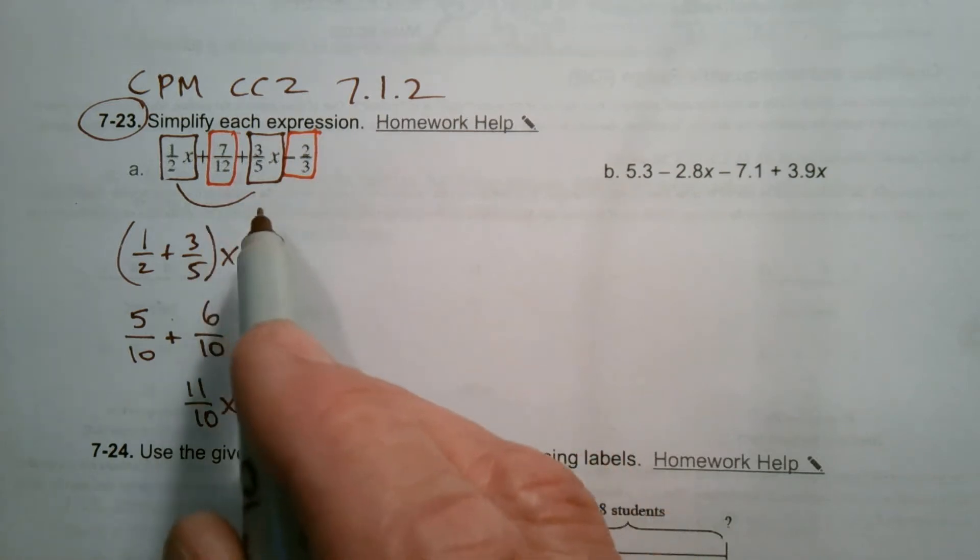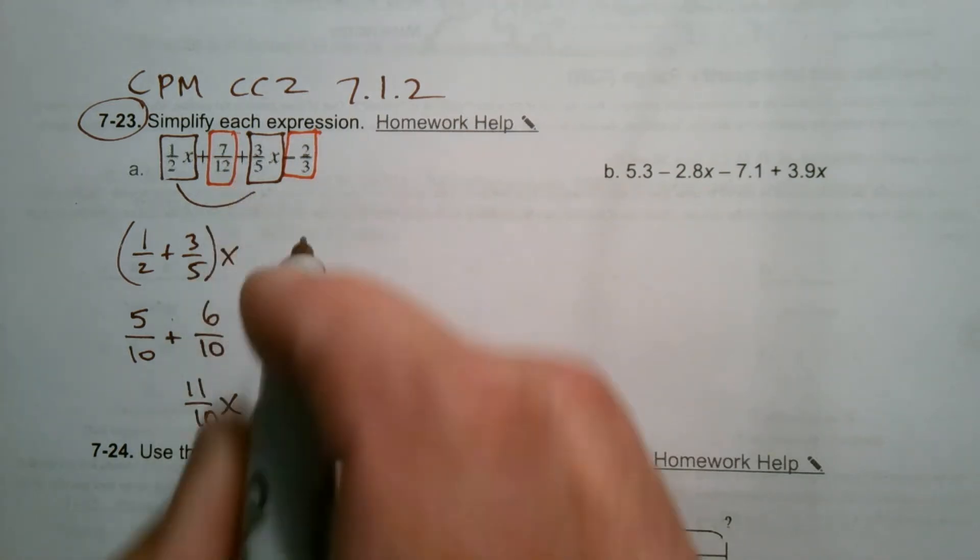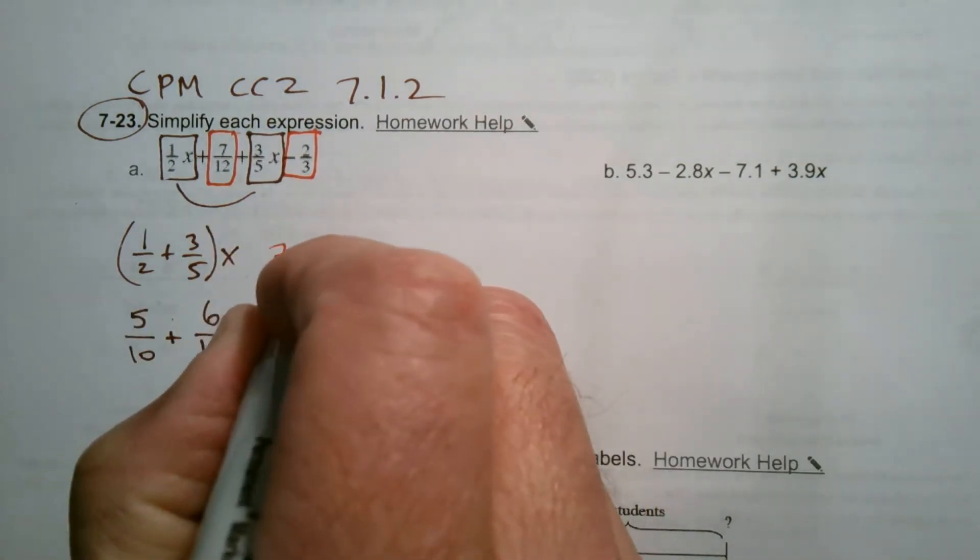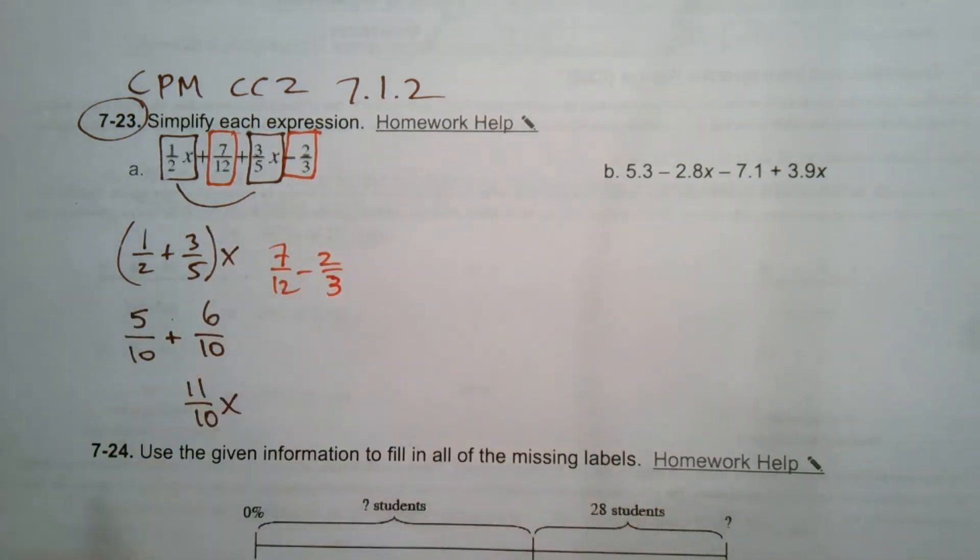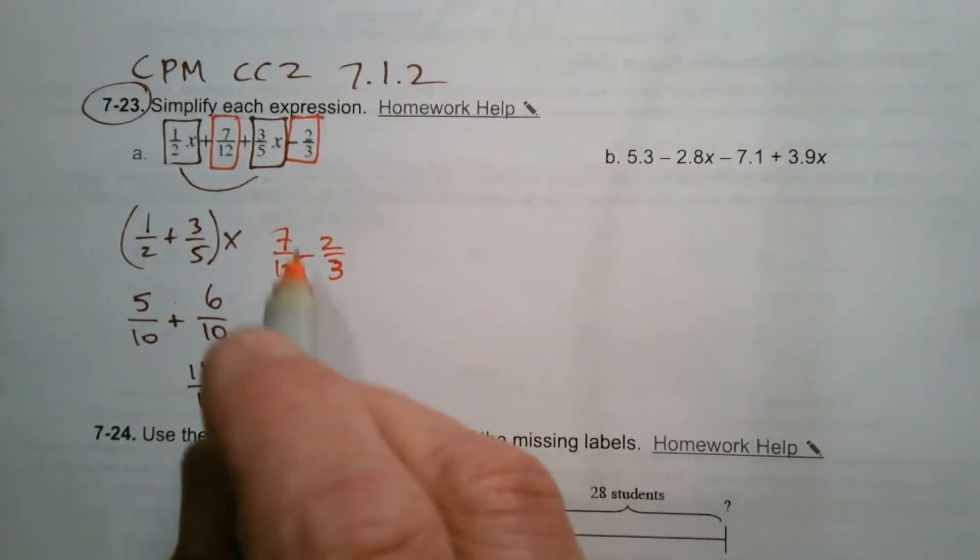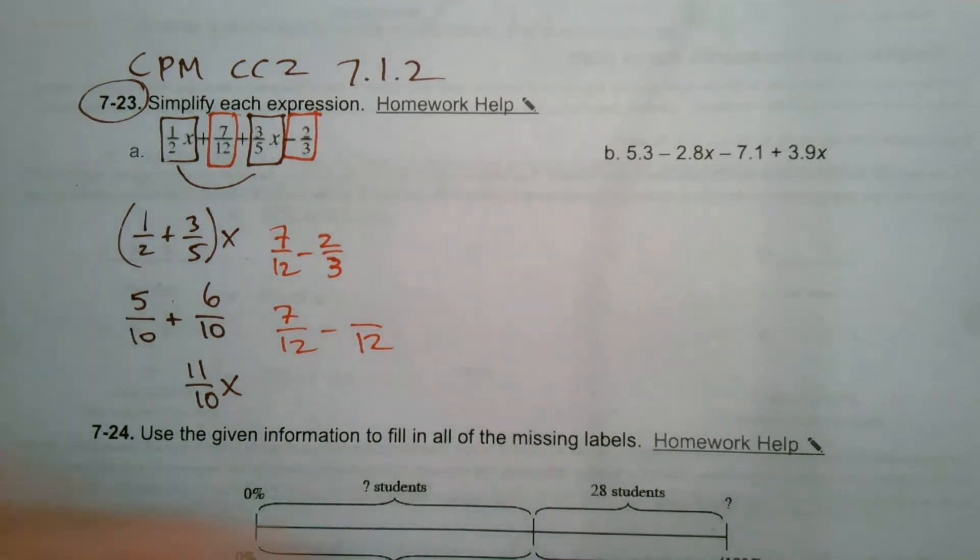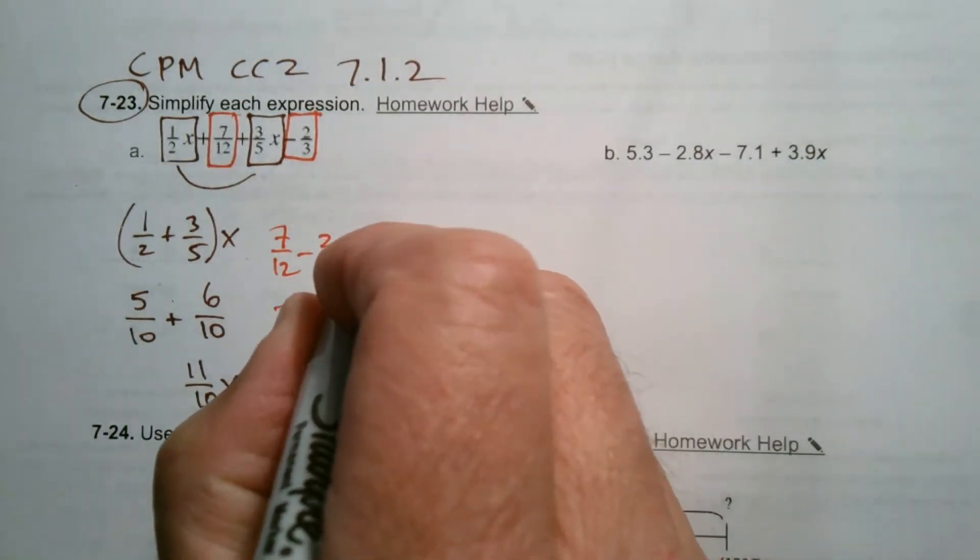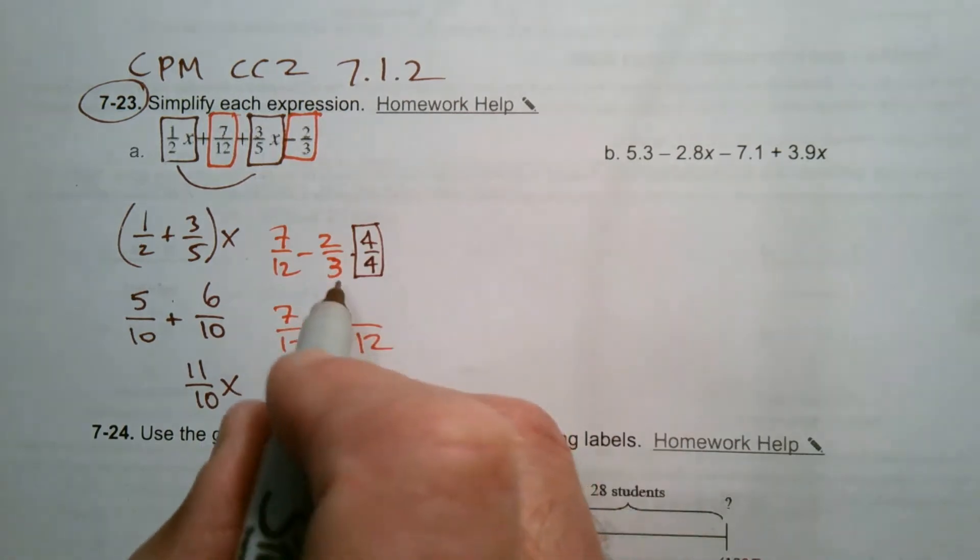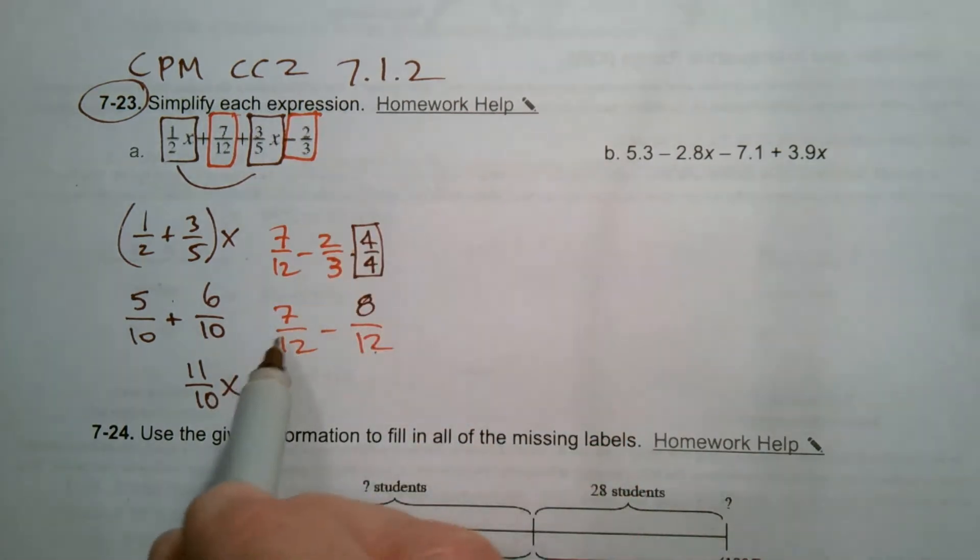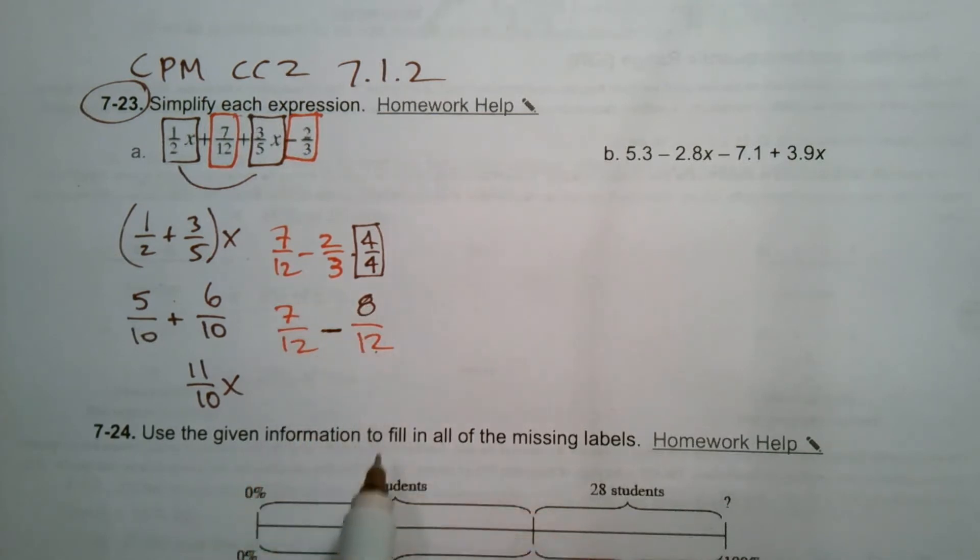For the constant, I'm taking the seven twelfths, and I'm going to be subtracting two thirds. So I need a common denominator as well in order to do the subtraction. So I can use twelfths. Seven twelfths won't change, but I need to change the two thirds to be twelfths. I can do that by multiplying by the giant 1 of 4 over 4. If I multiply top and bottom by 4, 3 times 4 is 12, 2 times 4 is 8. So I have 7 twelfths minus 8 twelfths.